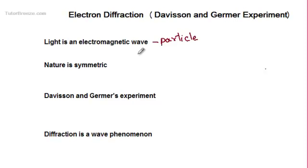Now, if nature is symmetric, then a particle like an electron or a proton should also behave like a wave.